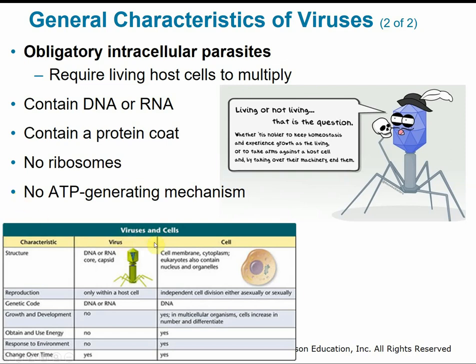Comparing viruses to cells: virus structure is very simple — genetic material in a protein capsid — whereas cells are more complex with a cell membrane, cytoplasm, and a nucleus and organelles in eukaryotes. Cells can reproduce independently, either asexually or sexually, whereas viruses can only reproduce within a host cell. Viruses are not able to grow and develop on their own, obtain and use energy, or respond to the environment.